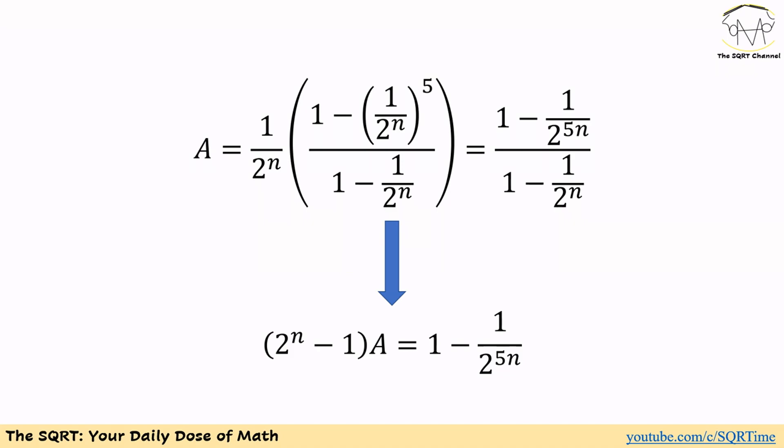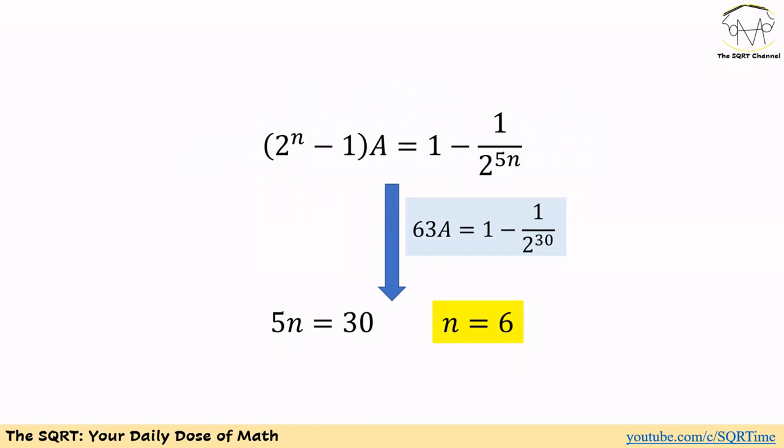Recalling that 63A equals 1 minus 1/2 to the power of 30, we need 5n to equal 30, so n equals 6. At the same time, 2 to the power of n minus 1 must equal 63, and you can verify that n equals 6 satisfies both conditions. So n equals 6 is our final answer.